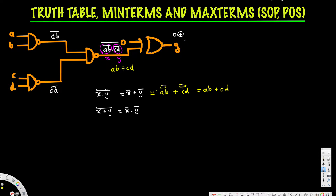The XOR gate with zero input gives us zero plus AB + CD, and since the zero term has no effect, the final output is AB + CD. Now let's verify this through the truth table.